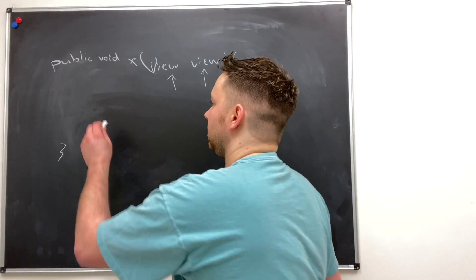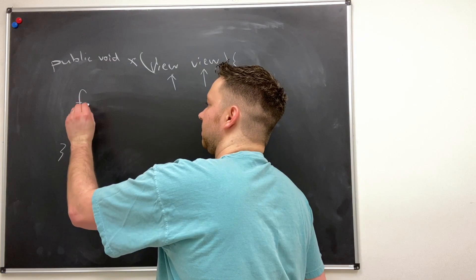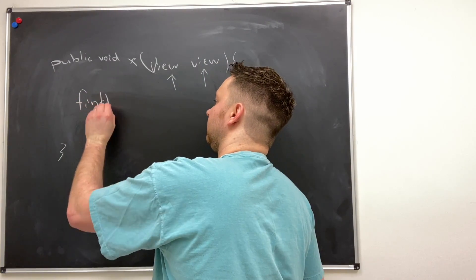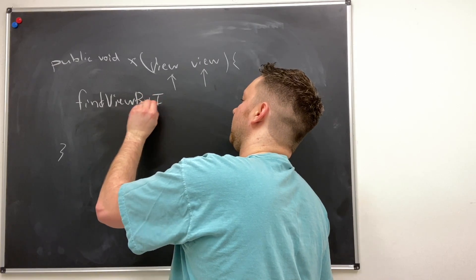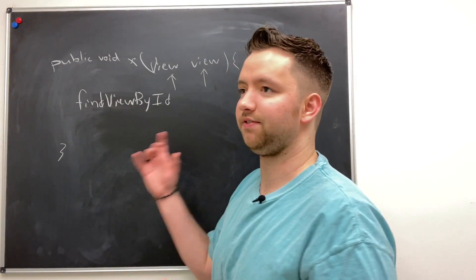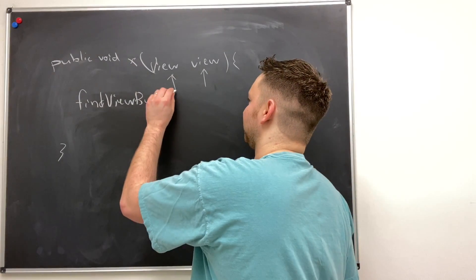But you can also get other objects using this special method which is find view by ID. Now I always forget if it's find view or get view so I had to check there for a second.